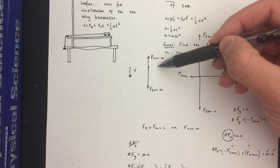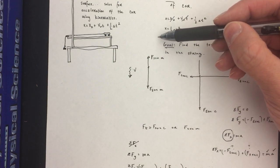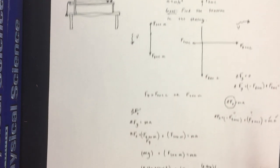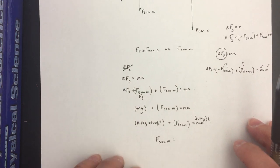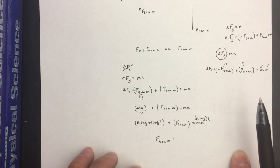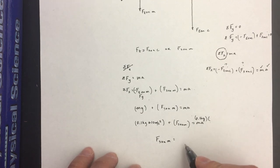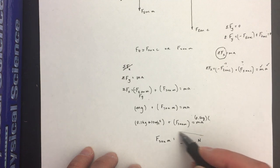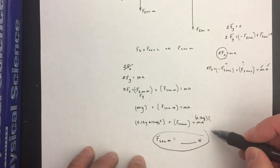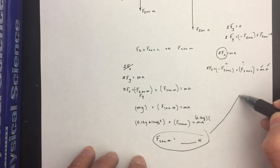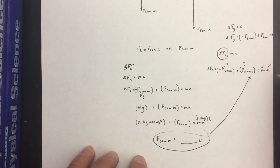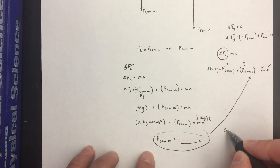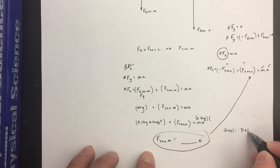Since the force of the string on the mass points upward, the value we calculate must be positive — if we get a negative number, we've made a mistake. Once we find this force in newtons, we can bring it into the car's force equation and solve for our ultimate goal: determining friction.